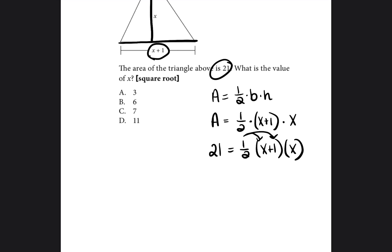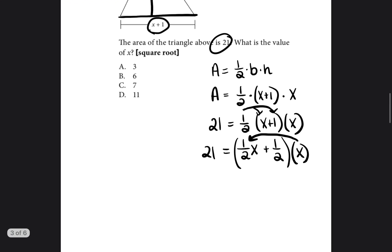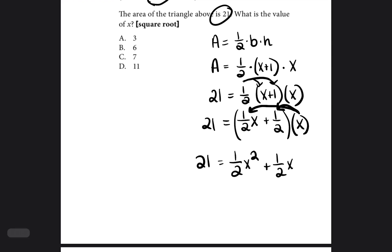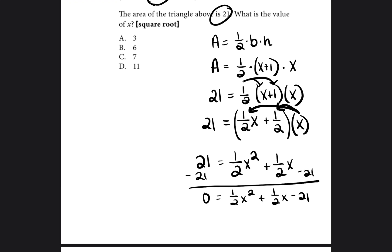We need to multiply everything out by x. Distributing x: x times 1/2x gives 1/2x², and x times 1/2 gives plus 1/2x. So we have 21 = 1/2x² + 1/2x. Now we bring the 21 to the other side by subtracting 21 from both sides, giving: 0 = 1/2x² + 1/2x − 21.